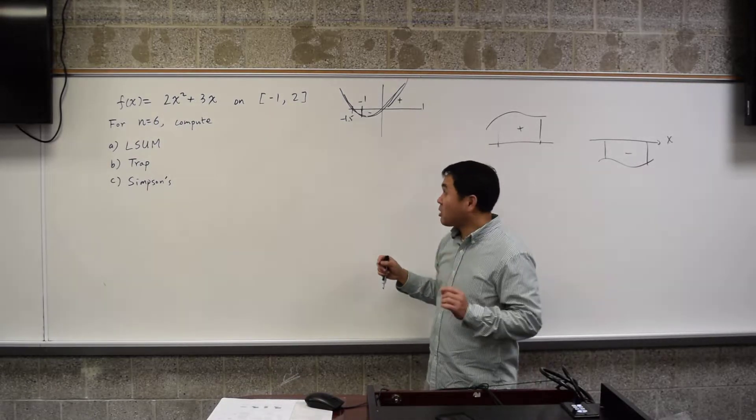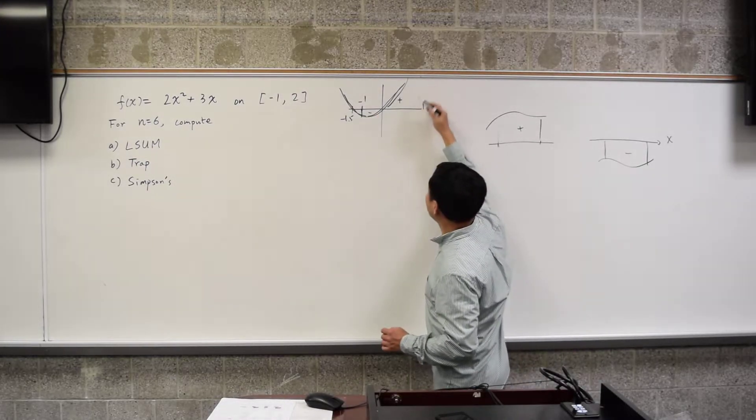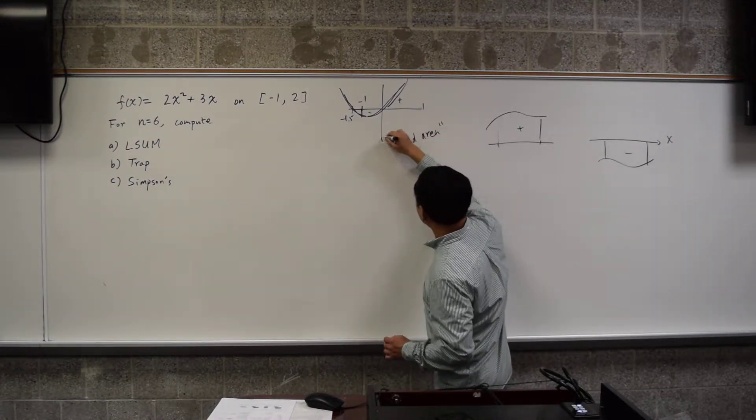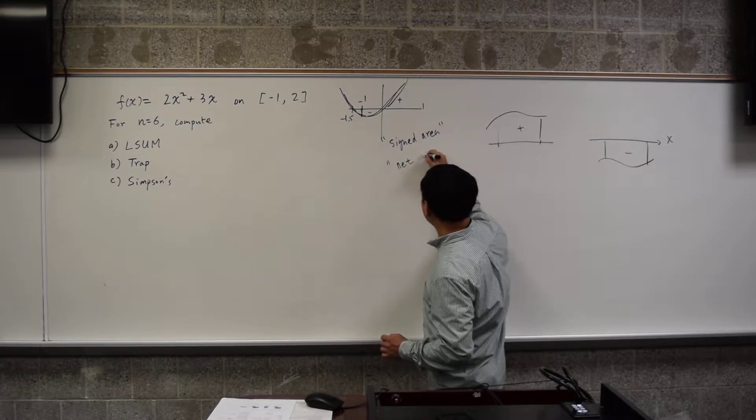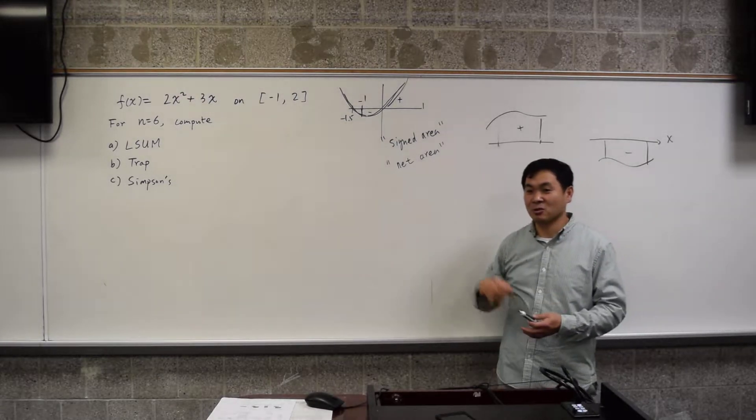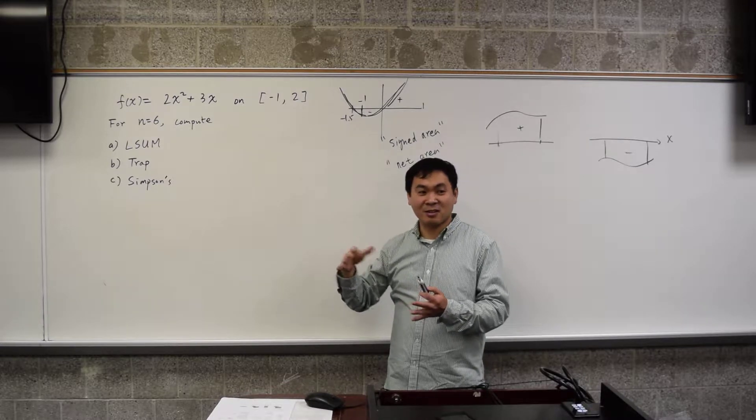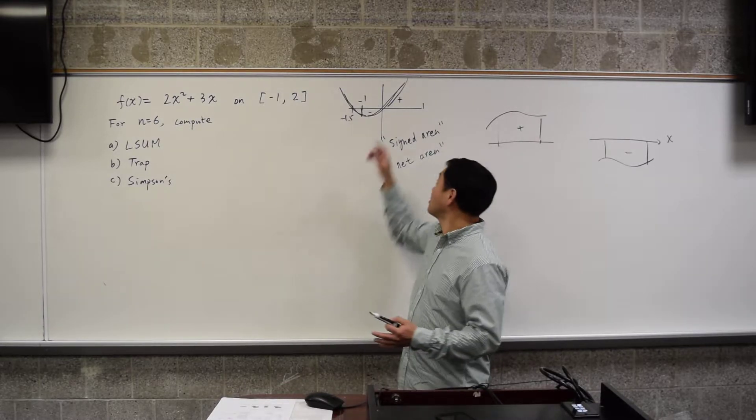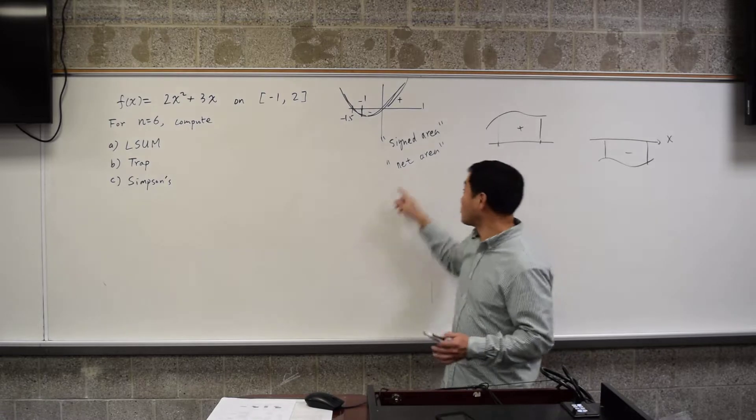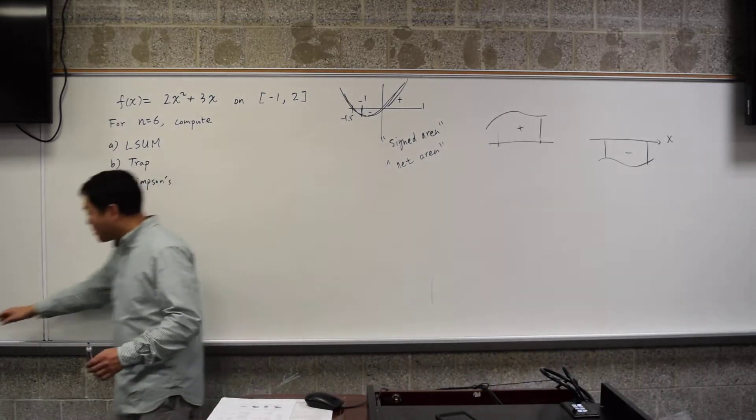Those are trying to approximate exactly that. Some people say it's signed area and some people talk about it as the net area. So net is like when you have an income but you spend it, then if you want to talk about the net of everything, you have to subtract the minuses from the plus. So you end up with a net quantity, that's what this net area is. All right, so that was just a side remark.